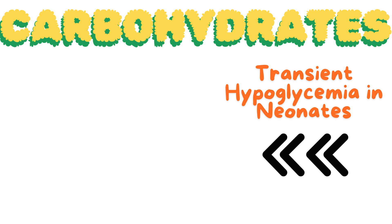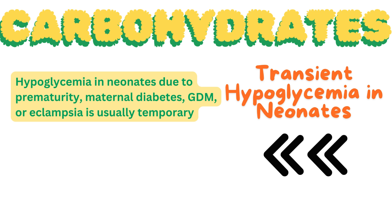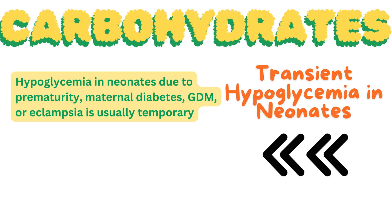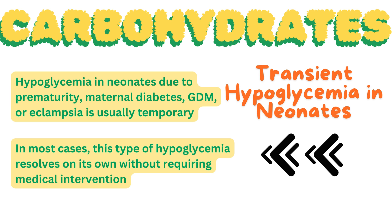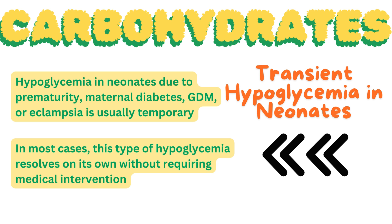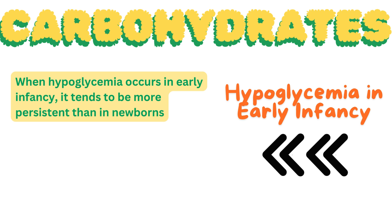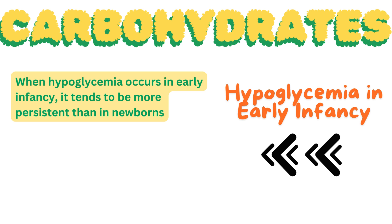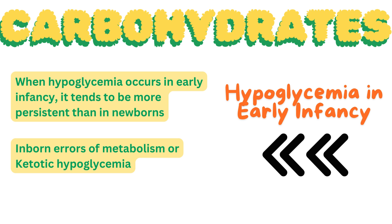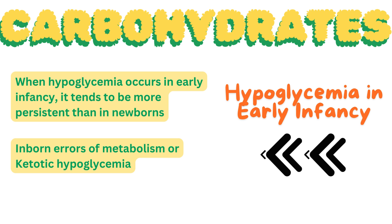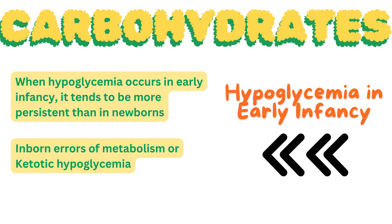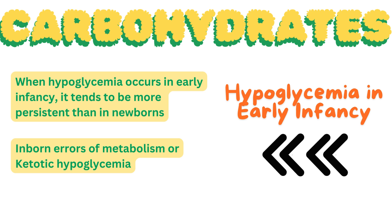The good news is that hypoglycemia in neonates due to prematurity, maternal diabetes, GDM, or eclampsia is usually temporary, and in most cases resolves on its own without requiring medical intervention. When hypoglycemia occurs in early infancy, it tends to be more persistent and can result from inborn errors of metabolism or ketotic hypoglycemia triggered by fasting or illness. In such cases, early diagnosis and management are crucial to avoid complications.